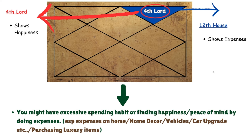The fourth lord shows happiness and the twelfth house is the house of expenses, so you might have excessive spending habits. You might be extravagant or feel happy when you spend your money — especially on significations of the fourth house such as your home, home decor, vehicles, upgrading your cars, or purchasing luxury items.